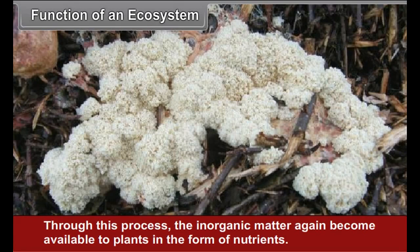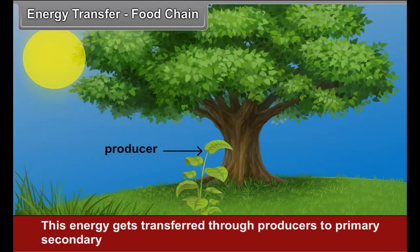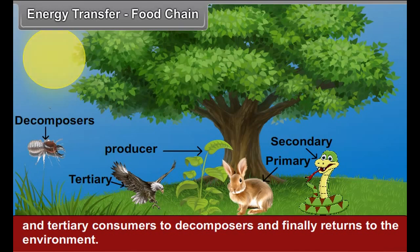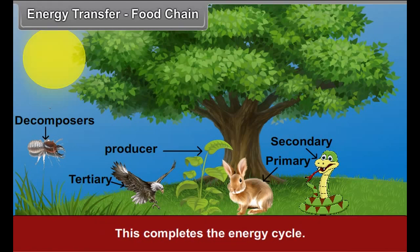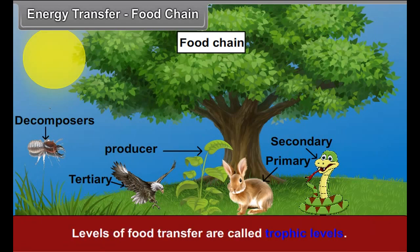Energy Transfer and Food Chain: With the help of solar energy, producers produce food. Food is energy. This energy gets transferred through producers to primary, secondary, and tertiary consumers, then to decomposers, and finally returns to the environment, completing the energy cycle. This sequential transfer of energy in the form of food is called the food chain. Levels of food transfer are called trophic levels.